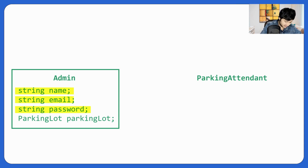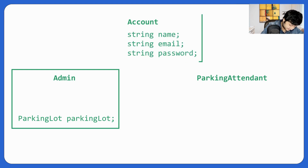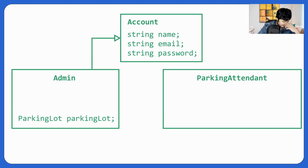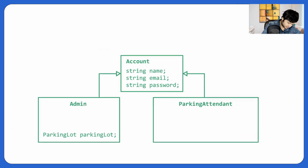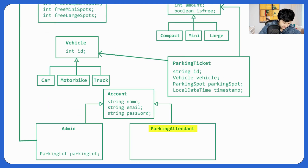We can separate out name, email, and password into a base Account class which both Admin and ParkingAttendant can extend. Account will have string name, string email, and string password. Admin extends Account. We're skipping the full ParkingAttendant implementation for now since it needs access to entry and exit services we haven't built yet, but it will also extend Account. Admin has an instance of ParkingLot, and ParkingAttendant can issue a ParkingTicket.